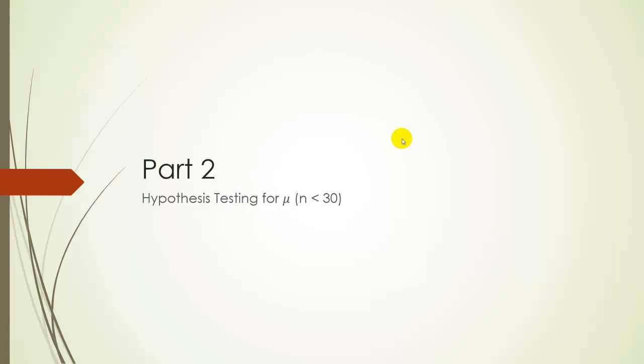Okay, for part two, we're going to do hypothesis testing for mu, but this time we're going to use small samples, which we defined as to be less than 30. This is going to be our same rules of what we're going to do essentially when we did confidence intervals for small samples. Same assumptions, same math.